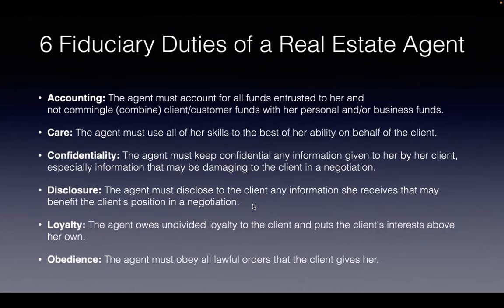Loyalty means I'm here to make my client win — if a house makes sense for them, that's the house I fight for, not the one where I make a bigger commission. Obedience means as long as they're not telling me to do anything illegal, I do it. That's where vicarious liability comes into play — if they tell me to do something illegal and I do it, they'll likely get sued just as fast as me. These are your six fiduciary duties: Accounting, Care, Confidentiality, Obedience, Loyalty, and Disclosure — AC COLD.